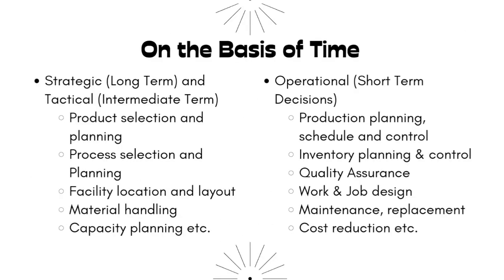On the basis of time, you can classify decisions as strategic or long-term, and tactical or intermediate-term. Strategic decisions include product selection and planning, process selection and planning, facility location and layout, material handling, and capacity planning. Operational decisions are the continuous short-term ones: production planning, scheduling, controlling, inventory planning and control, quality assurance, job and work design, maintenance, replacement, and cost reduction.